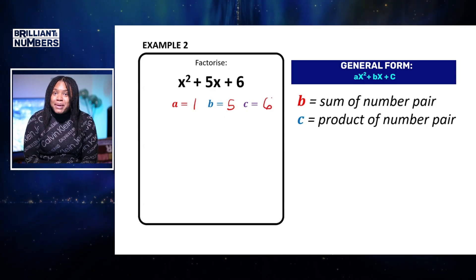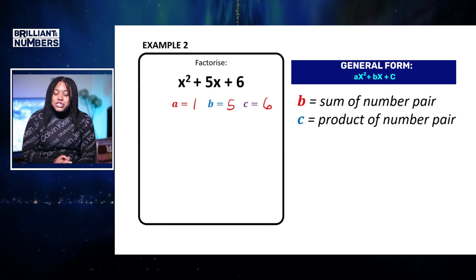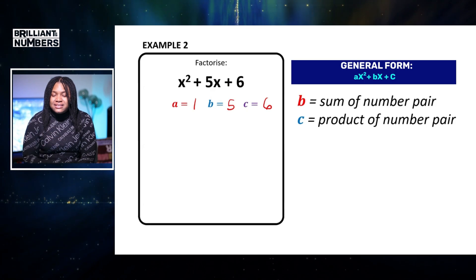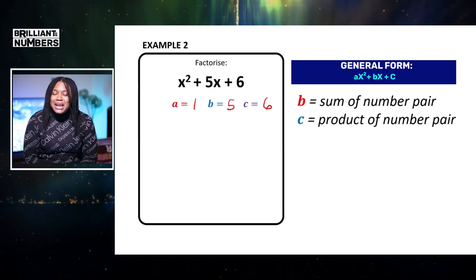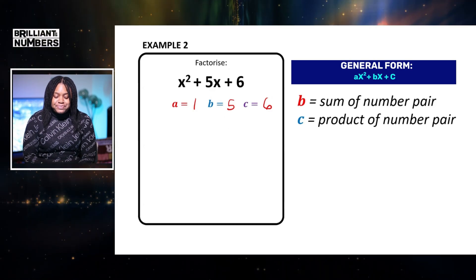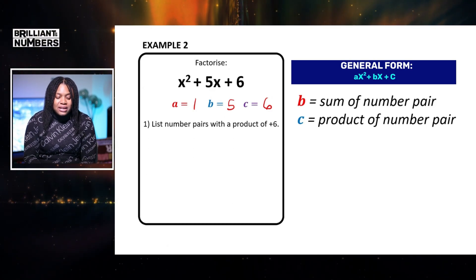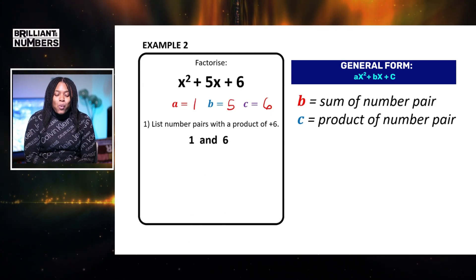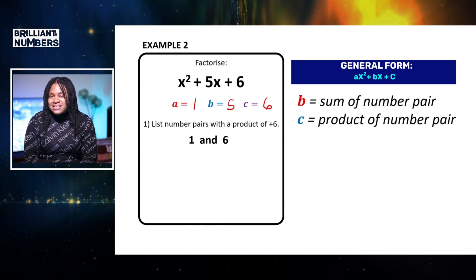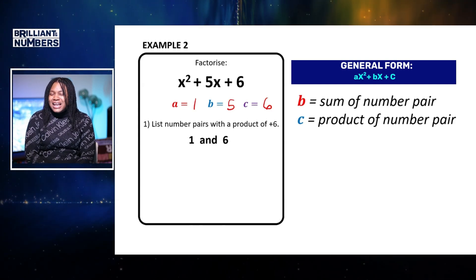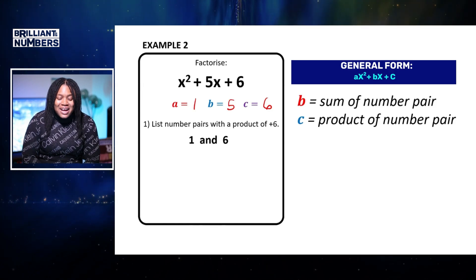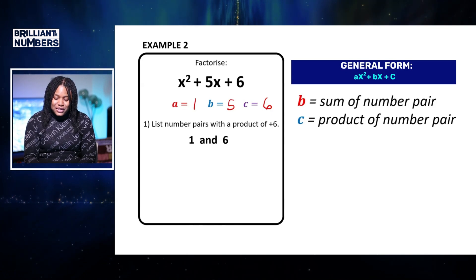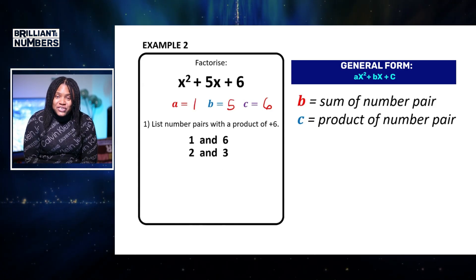Remember, I need a number pair that will sum to the middle term but multiply to the c term. So I'm going to go ahead and I'm going to list the factors of 6. So the first one, I need the factors to be a product of 6. So I could then have 1 and 6 because 1 multiplied by 6 is equal to 6. But unlike the other question we did, 1 and 6 are not the only pair that could multiply to 6. So we could also have 2 and 3.